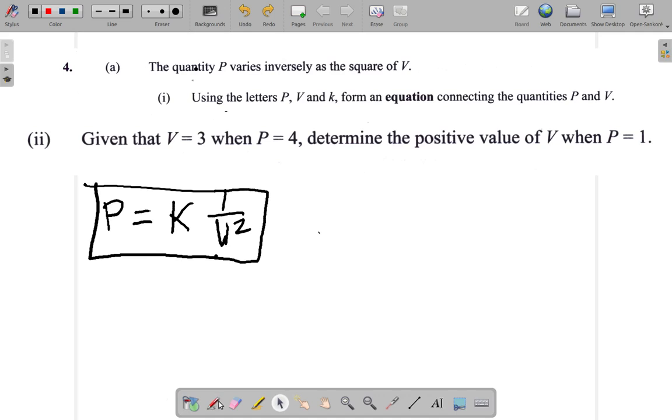Here, P is 4. So we have 4 equals K multiplied by 1 over, and they say V is 3, so it's 3 squared. The important thing here is to find out what is K.